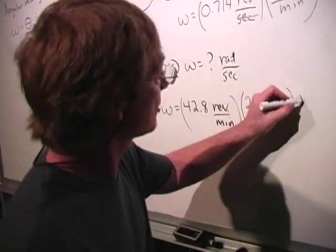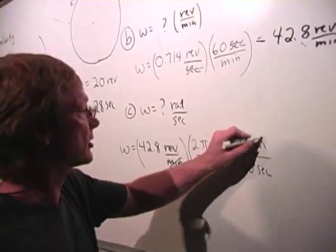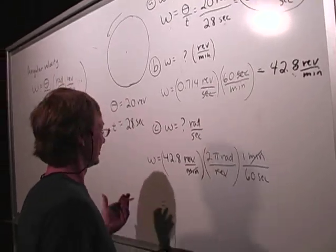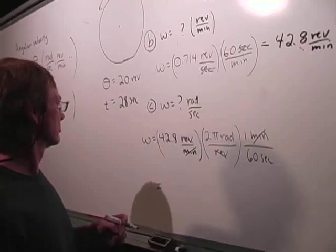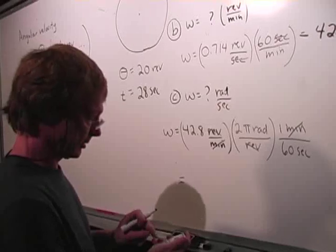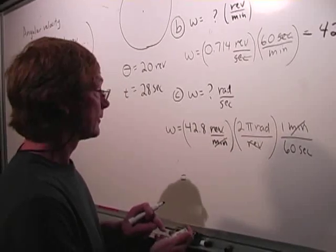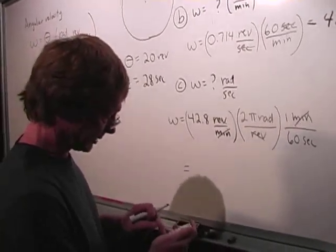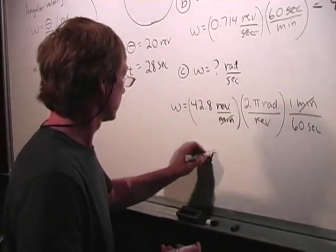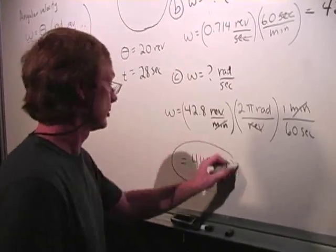I've got to get rid of minutes. There's one minute for every 60 seconds. Minutes are on bottom, minutes are on top. Good. Now, I've got radians per second. And we'll see what this is. It's going to be about 4.4 or something like that. 42.8 times 2 times pi divided by 60, 4.48. And that's radians per second.